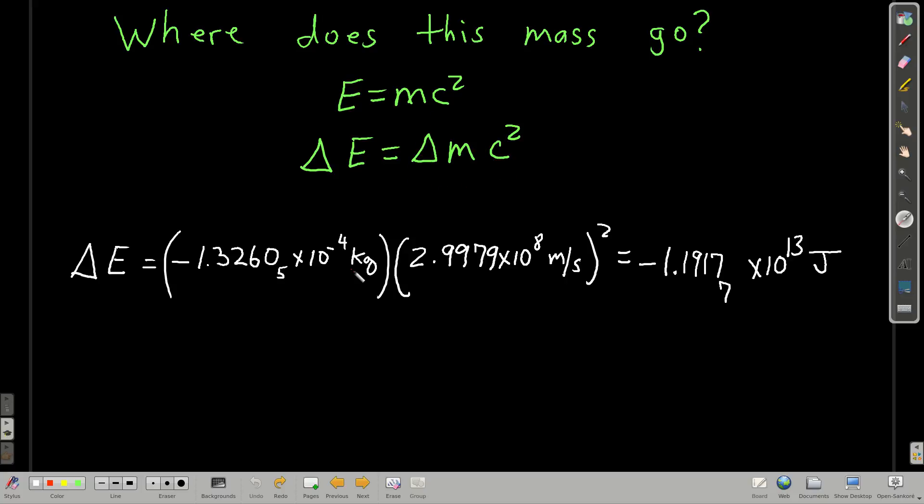Well, the difference in mass is what we just calculated. This is why we put it in kilograms, so we can put it in this equation here. So, we plug in our difference in mass between the protons, neutrons, and the actual nucleus, right here, times the speed of light squared. We get negative 1.1918 times 10 to the 13th joules.